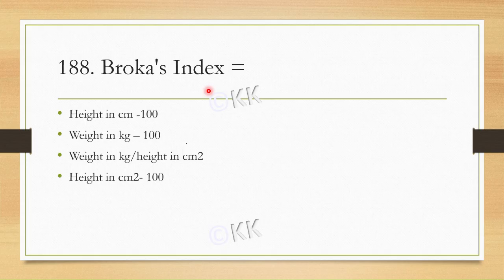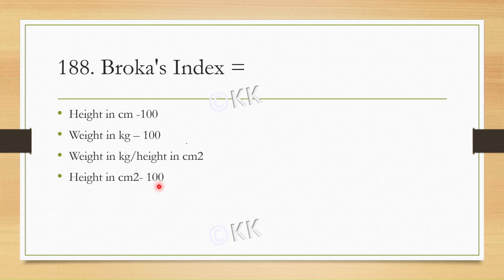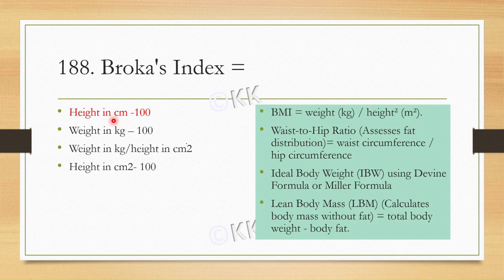Broca's Index equals: Option A: Height in cm – 100. Option B: Weight in kg – 100. Option C: Weight in kg by Height in cm². Option D: Height in cm² – 100. The correct option is height in cm – 100.